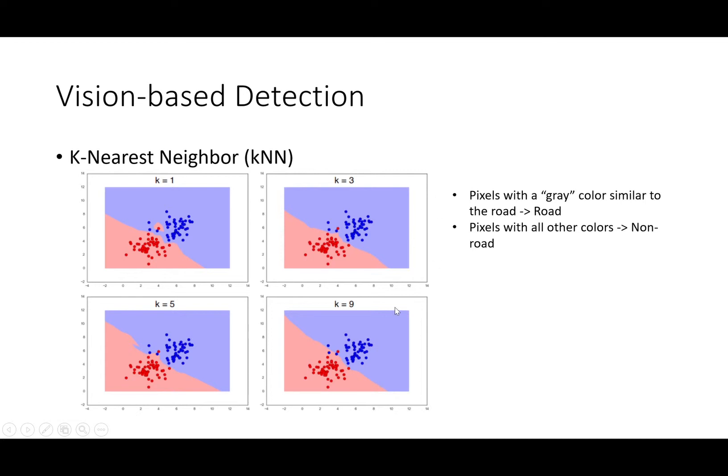So intuitively, the road pixels have a consistent grayish color. We are trying to classify pixels with similar gray color to road and pixels with all other colors to non-road.